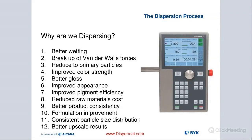We are looking for improvement in our wetting process. These Van der Waals forces — invisible electromagnetic binding forces — hold these pigment particles together. We want to reduce those clusters down to the primary particle size. That will give us better color, better gloss, and improved overall appearance. We get better pigment efficiency, which helps reduce raw material costs. We have more product consistency, formulation improvement, and a more consistent particle size distribution.